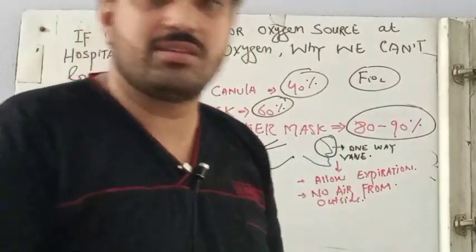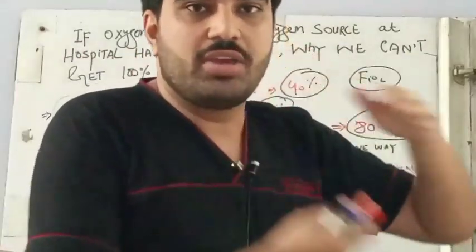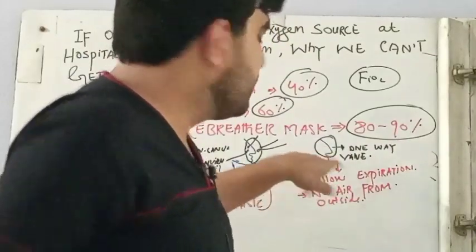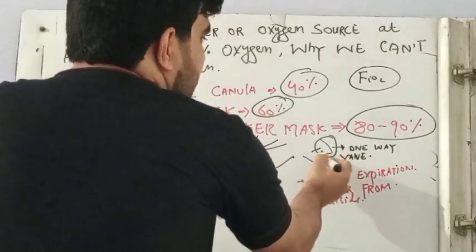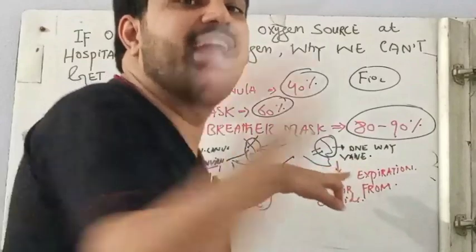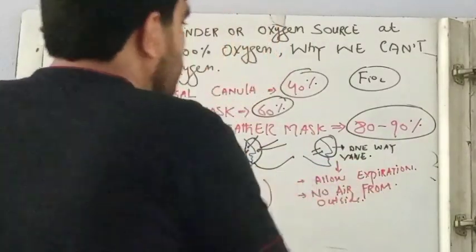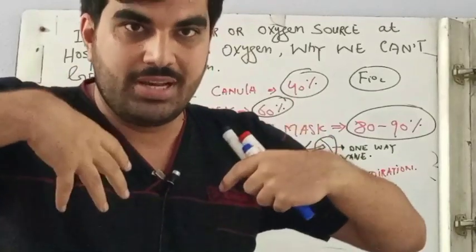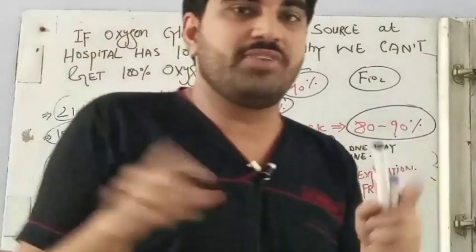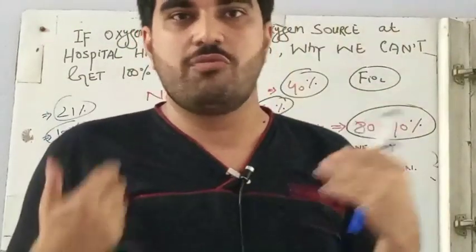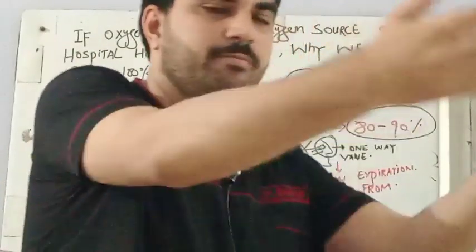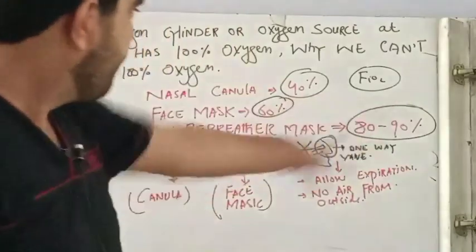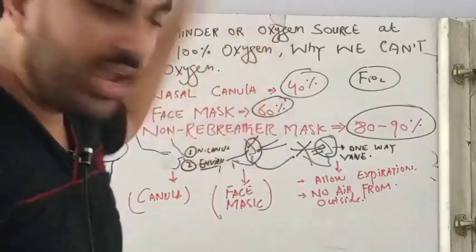With the non-rebreather mask, there is a reservoir bag in which oxygen is stored. There is a special one-way valve mechanism allowing air from the lungs to exit into the environment during exhalation, but no air comes from the environment into the lungs — or only a very small amount does. Because very little or no environmental air enters, you have significantly increased the FiO2, which is why the non-rebreather mask achieves 80 to 90%.